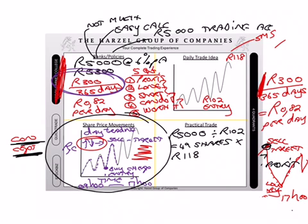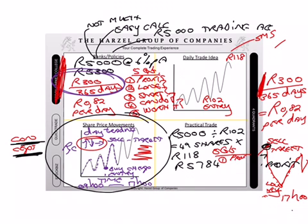I have 49 shares and I multiply by the selling price, which is 118. That gives me 5,784. So the profit was 784 rand. How long did that take? It took me a day — it could have even taken a couple of hours. Yeah, so one day — let's just keep it simple.